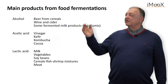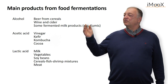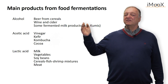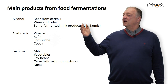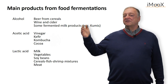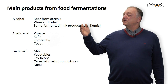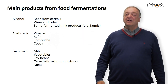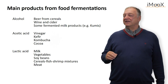When we look at the products from food fermentations, we have alcohol. This is one of the biggest products, for example for beverage production — alcoholic beverages like beer, which is produced from cereals, or wine from grapes, or cider from other fruits. And also in some fermented milk products, for example in kumis, we have a limited amount of alcohol present.